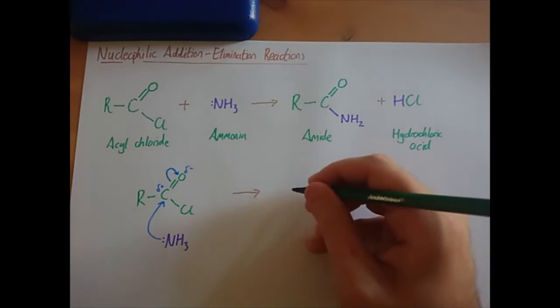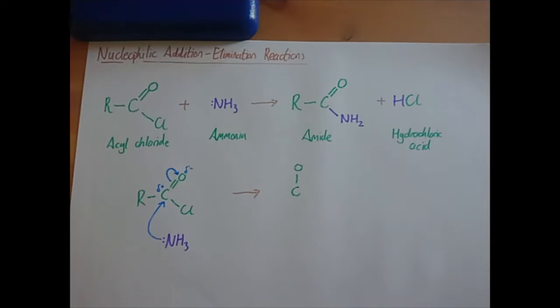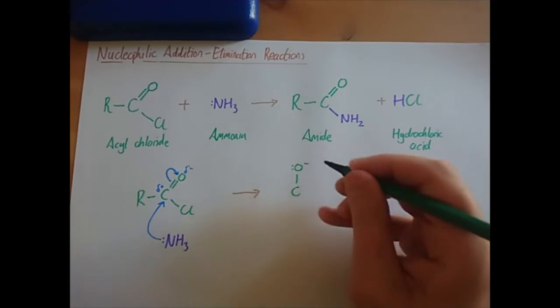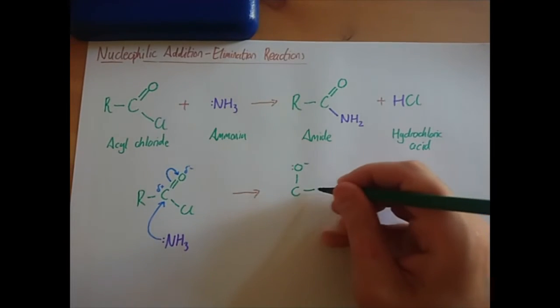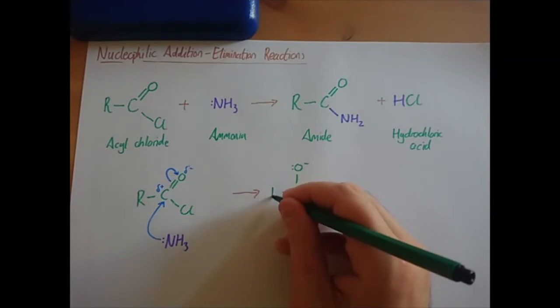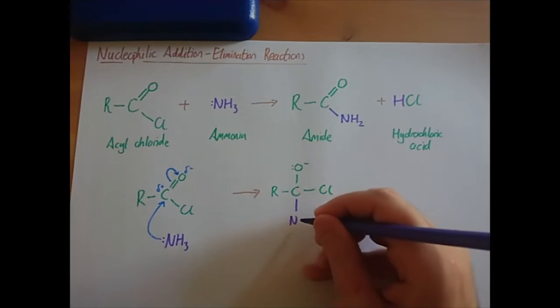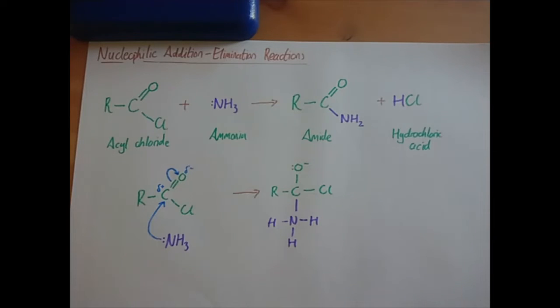That leaves us with carbon bonded to an oxygen. Because the electrons have been transferred to the oxygen, the oxygen now has a negative charge. We haven't done anything with the carbon-chlorine bond, so that still exists. We haven't done anything with the carbon-R bond, so R still exists. But what we have done is formed, or attached, the NH3 onto it, just like nucleophilic substitution with ammonia.